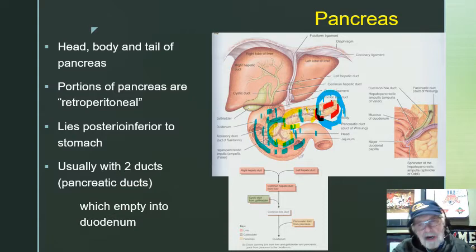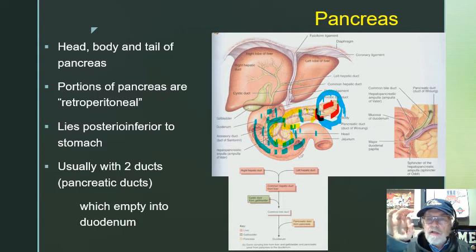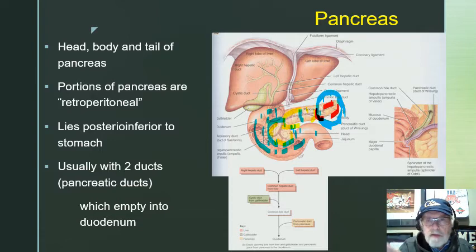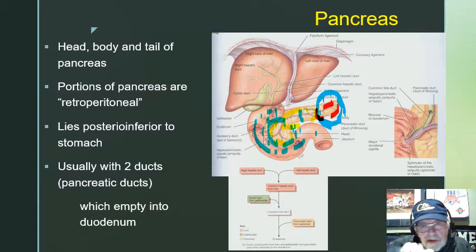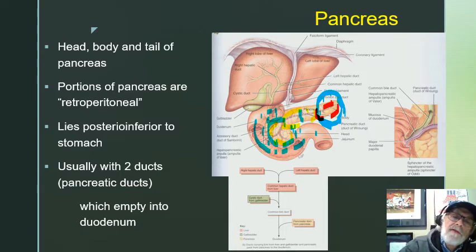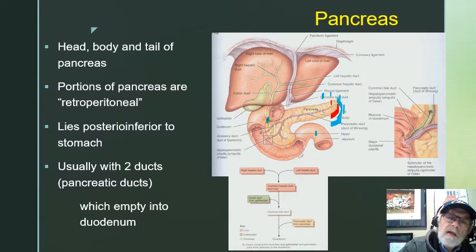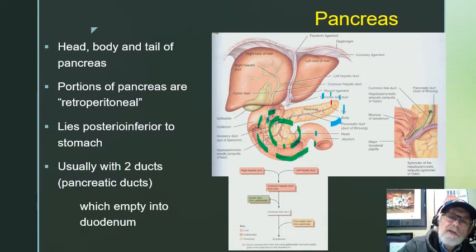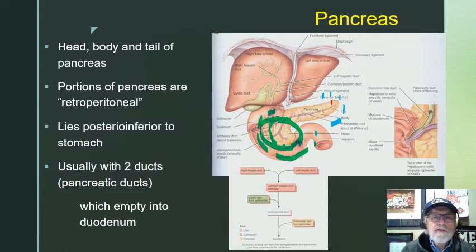I can't get to the pancreas without getting behind the stomach — it lies posteriorly and inferior to the stomach. We protect that little epiploic foramen, or foramen of Winslow, where we have the lesser omentum that connects the liver to the lesser curvature of the stomach. There's a little hole that you go inside to get back by the duodenum. The head of the pancreas sits within the C-loop of the duodenum.